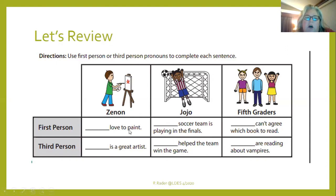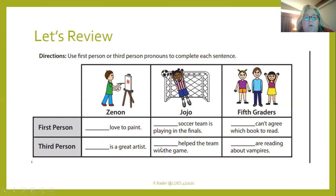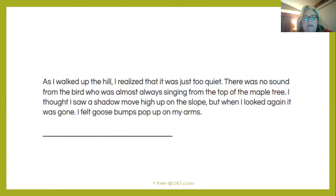For third person pronouns: blank is a great artist — we're going to talk about Xenon: Xenon is a great artist. The second one: blank helped the team win the game — he or she helped the team win the game. And the last one: blank are reading about vampires — they: They are reading about vampires. Good job on your review!